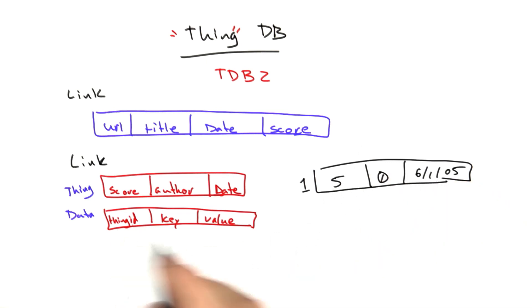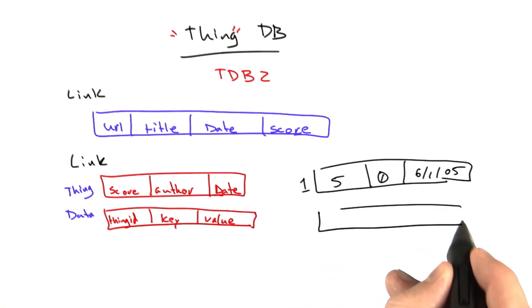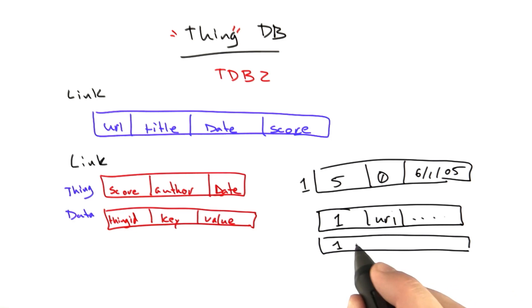And then it may have a data table. It may have a bunch of rows in the data table. So it would have one row that would be like thing ID 1 equal to URL, and then another row, thing ID 1, title. And so for every property of a thing that wasn't common across all of the things, we would have a row in the data table.